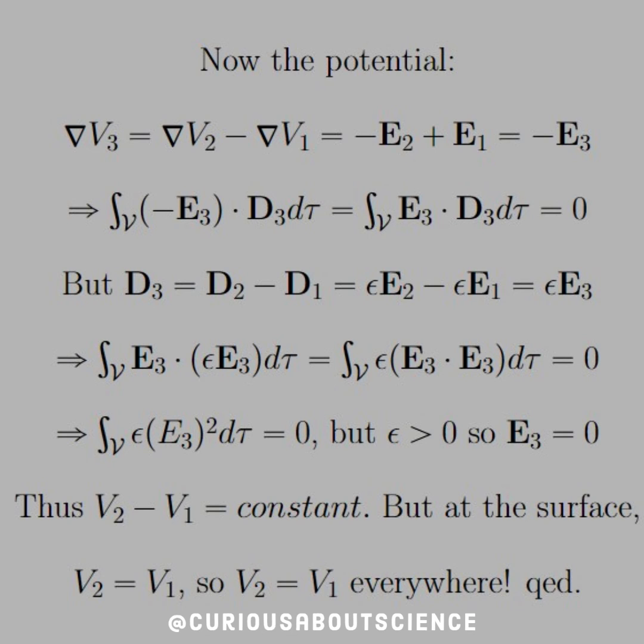Now we can move on to what the electric displacement is, and D3 is equal to D2 minus D1. Plug in how that's related to the electric fields, and we see that that's equal to epsilon E3.